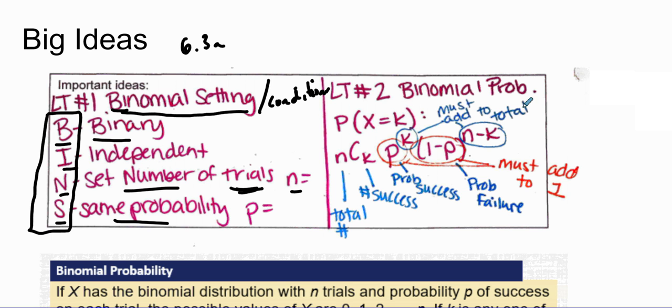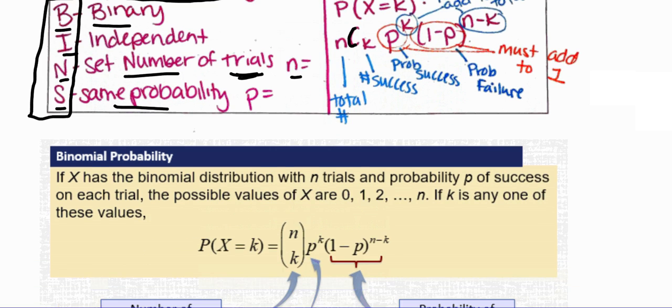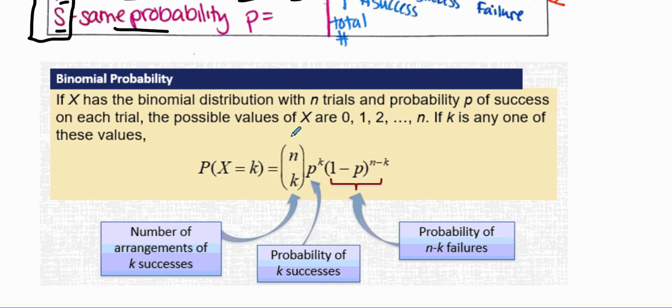How do you find a binomial probability? If you want to find P, the probability of X event happening this many times, you take the total number N of trials with combinations, K being the number of successes you're looking for, and P the probability of success to the K power, times 1 minus P to the N minus K power. Sometimes this is written as N over K instead of the combination notation.